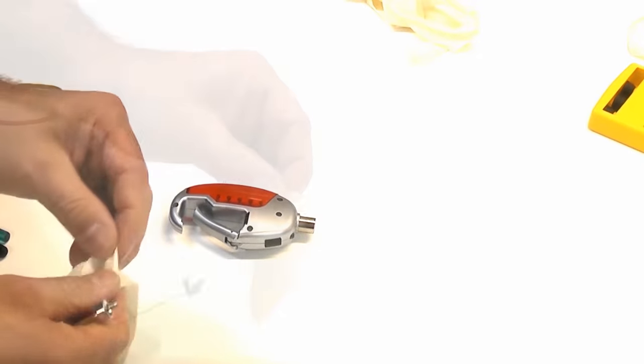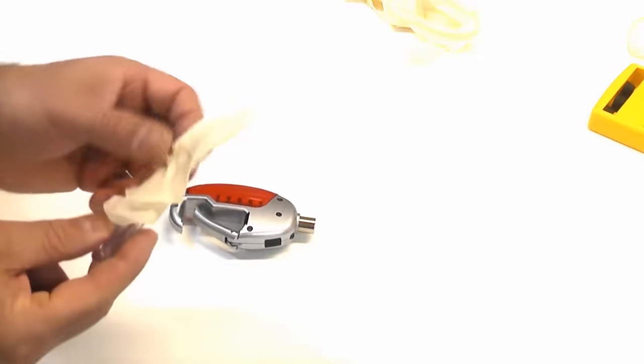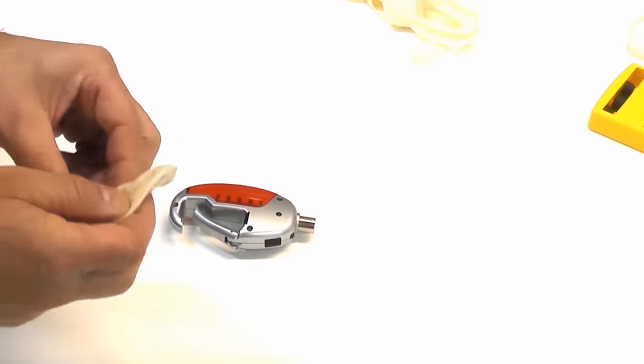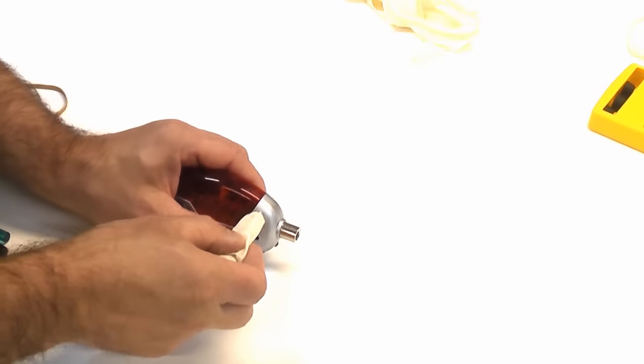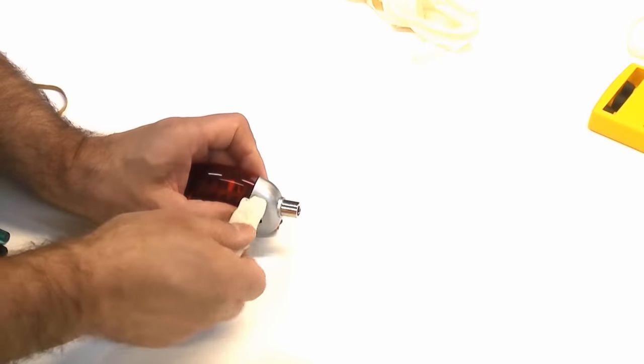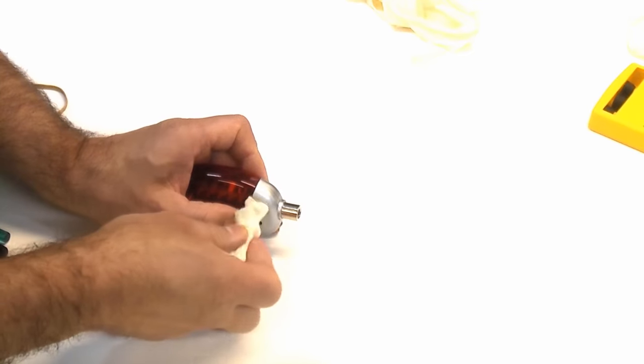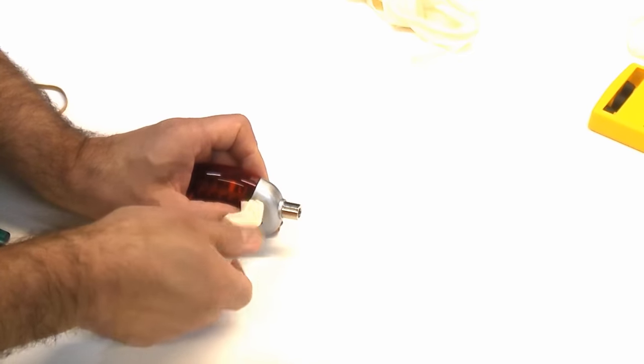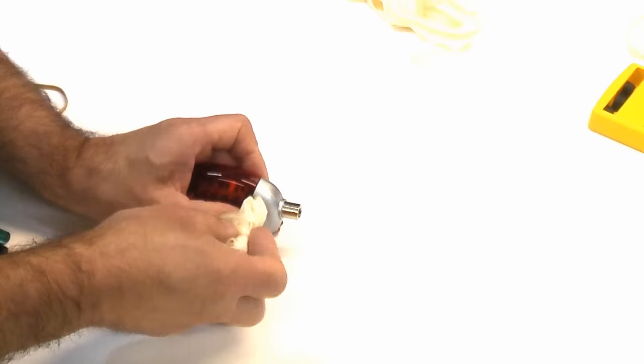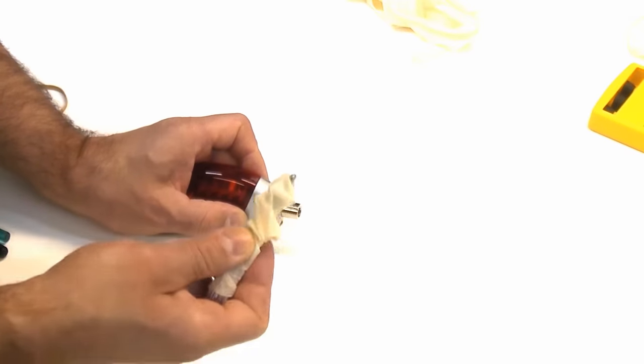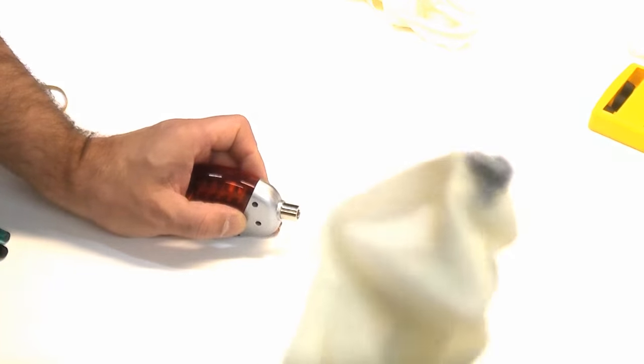I'm going to get the thumb off there and put the screwdriver in there, and we'll see if that will remove the screw. It does feel like it is undoing, and there we go, we've actually got the screw out.